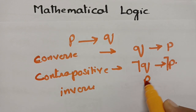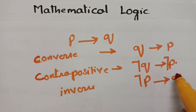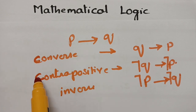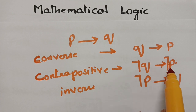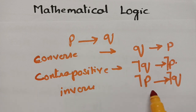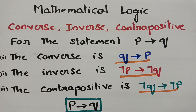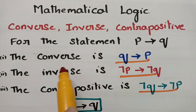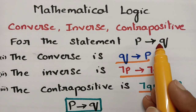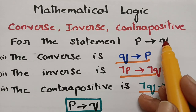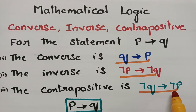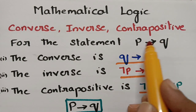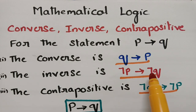For inverse, the structure is as it is — P implies Q — but with negation in front: negation P implies negation Q. To summarize: for converse and contrapositive, the pattern is Q implies P; for contrapositive specifically, it becomes negation Q implies negation P; and for inverse, the statement stays as P implies Q but with negation applied to both, giving negation P implies negation Q.